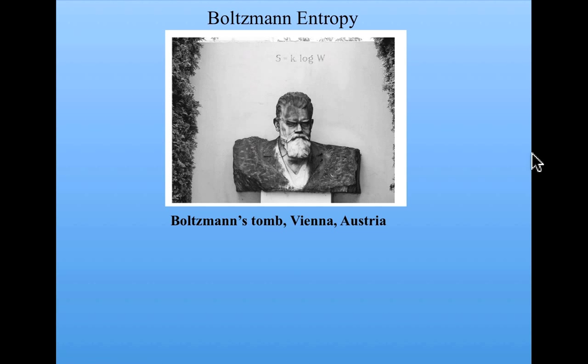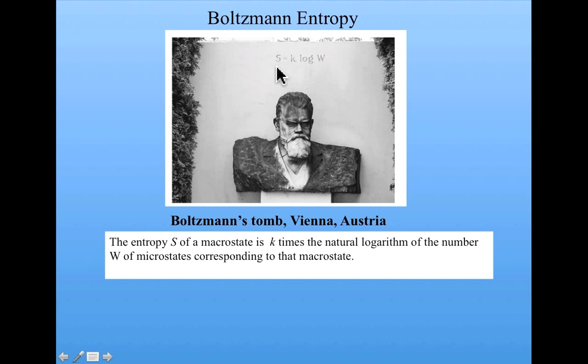Well, Boltzmann's definition of entropy is conveniently engraved on his tomb in Vienna. So no one ever has to forget it. And his definition says that the entropy S of a macrostate is some number K times the natural logarithm, that's this L-O-G, the natural logarithm, of the number W of microstates corresponding to that macrostate.